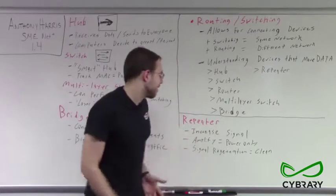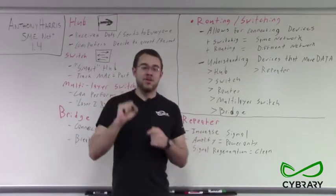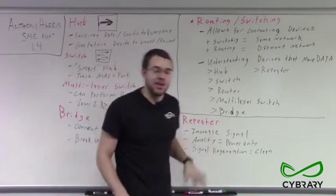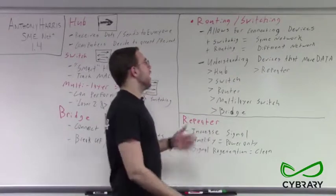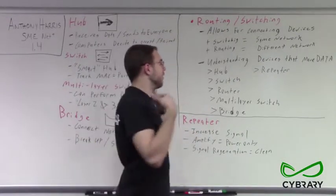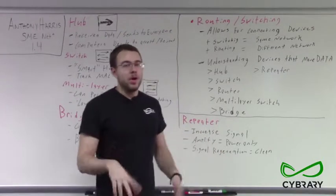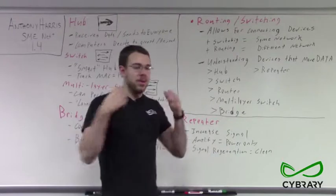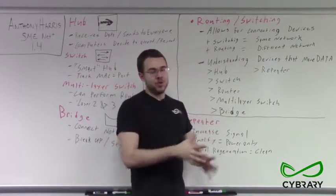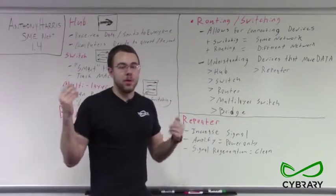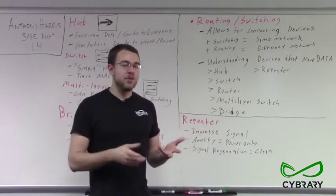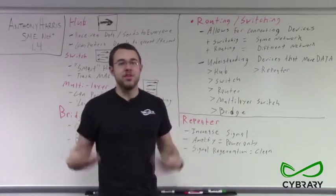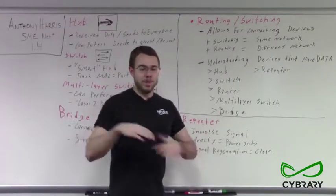Even in that case, we would still need devices like repeaters to boost our signals to travel that far distance over cable. To prevent us from having to do that, we have devices that allow us to route and switch. Routing and switching allows us to connect devices and communicate over a network — whether our own internal network or across multiple networks around the world — transmitting a packet from one network to another without individually cabling each computer directly together. This allows us to use devices such as routers, switches, hubs, repeaters, and bridges to get our signal wherever it needs to go.